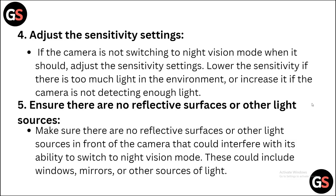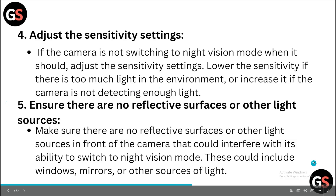Step 5: Ensure that there are no reflective surfaces or other light sources in front of the camera that could interfere with its ability to switch to night vision mode. This could include windows, mirrors, or other sources of light.